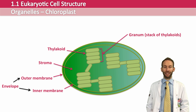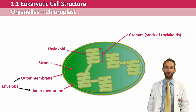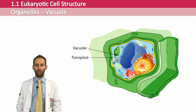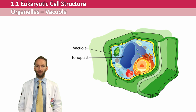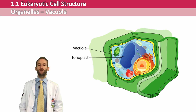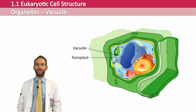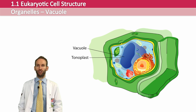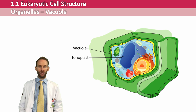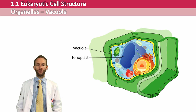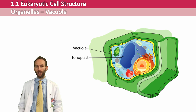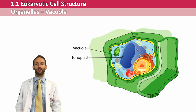Animal cells sometimes have a small temporary vacuole, but plant cells have a large permanent vacuole filled with cell sap — dissolved substances and water — which helps maintain the cell shape and keep it turgid, and also serves as a site of storage. The vacuole is surrounded by its own membrane called the tonoplast.